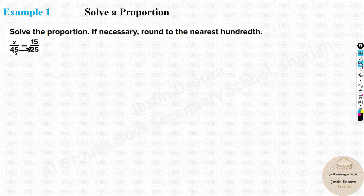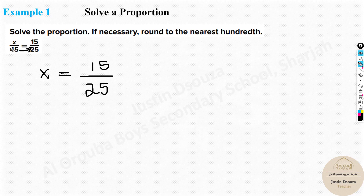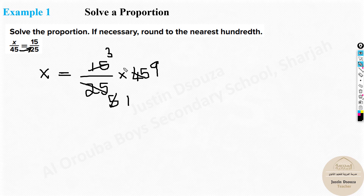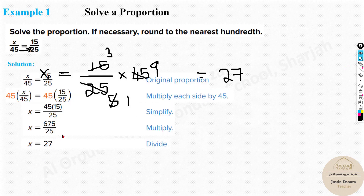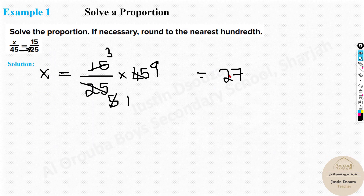Take the 45 to the other side — it goes from division to multiplication. It becomes x equals 15 divided by 25 times 45. Now simplify: five goes into this five times and nine times, giving us 27. So the final answer is x equals 27. You can also put this directly in the calculator.